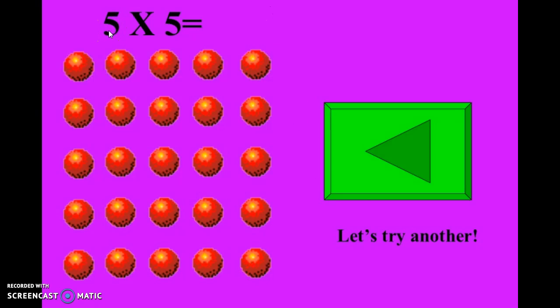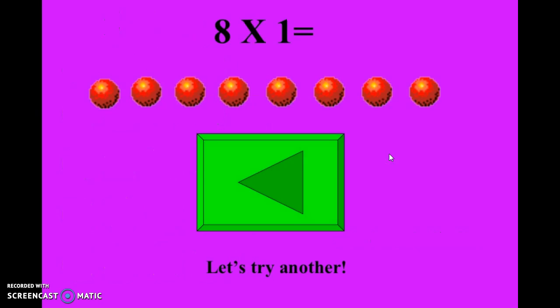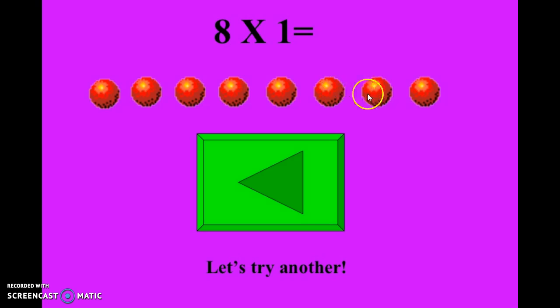Here we have five sets of five oranges, which equals twenty-five. Here we have eight times one — as I was saying before, any time you have a digit multiplied by one it equals your first digit. For example, you have eight oranges in one set: one, two, three, four, five, six, seven, eight. It's always going to equal your original number when multiplying by one.